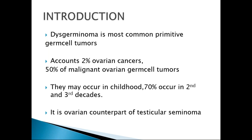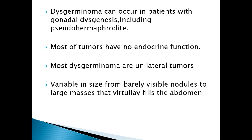They may occur in childhood, but 70% occur in the 2nd and 3rd decades. Dysgerminoma is the ovarian counterpart of testicular seminoma. It can occur in patients with gonadal dysgenesis and in pseudohermaphrodites. Most tumors have no endocrine function, and most dysgerminomas are unilateral tumors. They are variable in size, from barely visible nodules to large masses that virtually fill the abdomen.